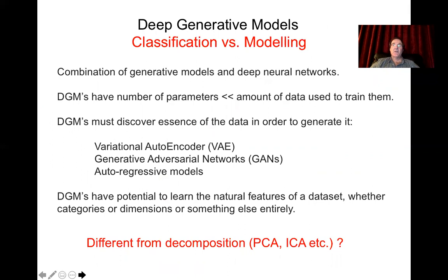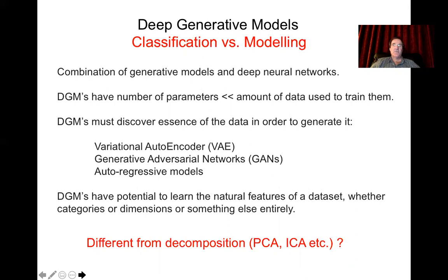Deep generative models are now beginning to appear — combinations of generative models and deep neural networks — where the number of parameters is far less than the amount of data used to train them. DGMs must discover the essence of the data in order to generate it. Various strategies are being used: variational autoencoders, generative adversarial networks, and auto-regressive models. They have the potential to learn the natural features of a dataset, whether categories, dimensions, or something else entirely. I would ask the audience to explore how these approaches differ from classical statistical decomposition approaches like PCA and ICA, which reduce the dimensionality of the problem.